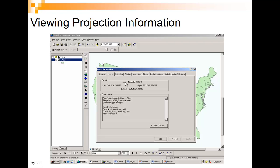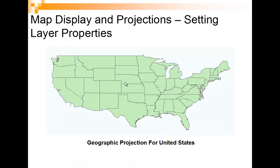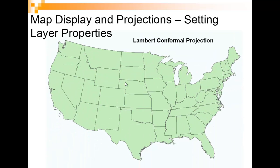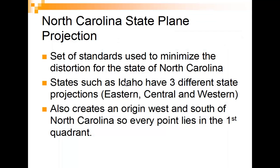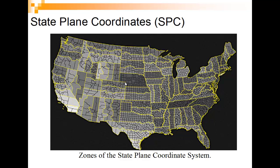We can view projection information in our metadata or layer properties. For a geographic projection, if you were to show a map of the U.S. that way, it would look really ugly. So we want to show something that looks nice and neat. You notice how kind of long this looks — this would look a little bit better. And then we have the North Carolina State Plane projection, which minimizes distortion for particular states.